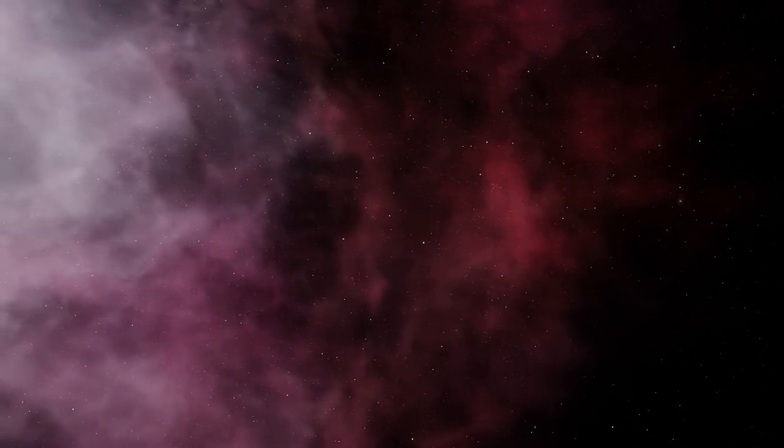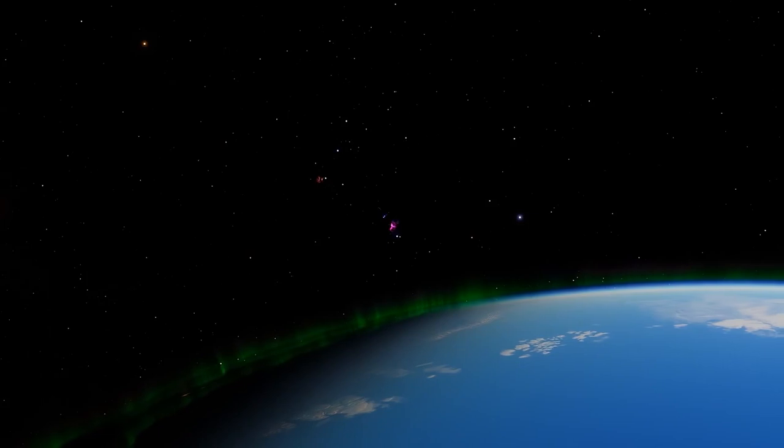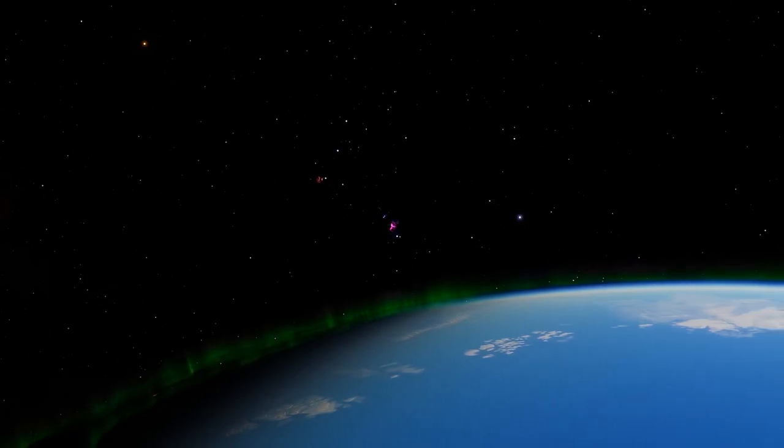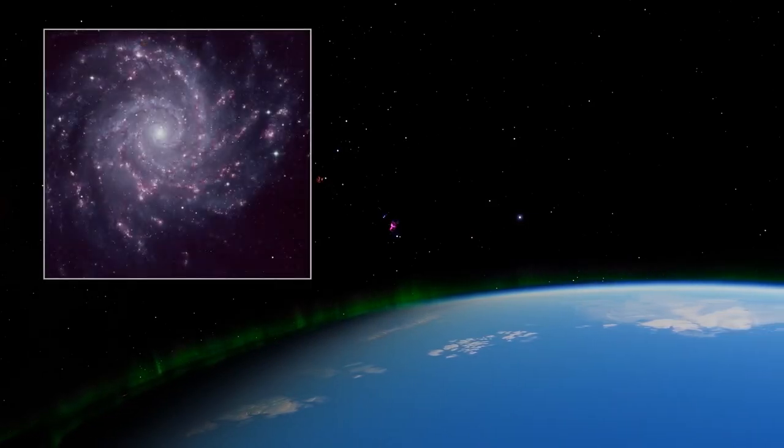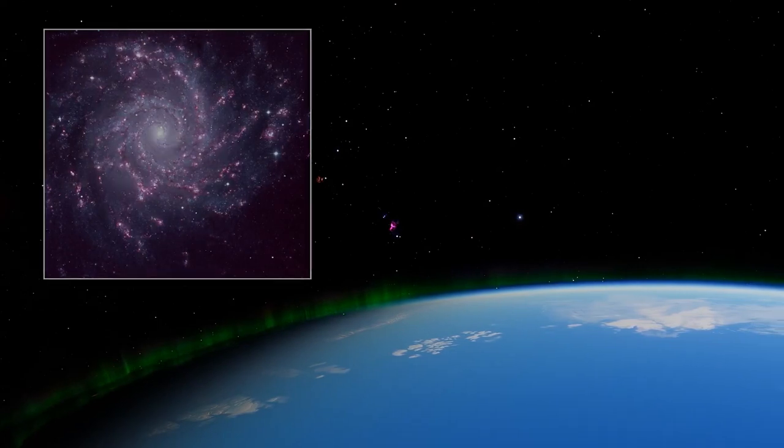One remarkable aspect of Messier 33 is its striking spiral arms, which are beautifully defined and intricately woven. These arms showcase a wealth of star-forming regions, where dense clouds of gas and dust give birth to new generations of stars.